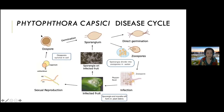The second important spore is the oospore. This one only forms if you have both the A1 and A2 mating types in your field. That's important because when you have just one by itself, winter may kill it. But once you have the oospore, the pathogen is able to essentially persist and infest your field. So those are important things to keep in mind with this pathogen.